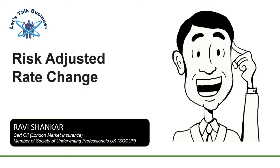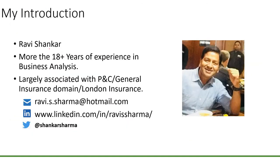Hello and welcome to your own channel. Let's talk business once again. In this short session we will talk about the RARC, which stands for Risk Adjusted Rate Change. It's an important parameter which has to be measured during the renewal to evaluate whether the rate change during the renewal is sufficient enough to meet the syndicate business plans.